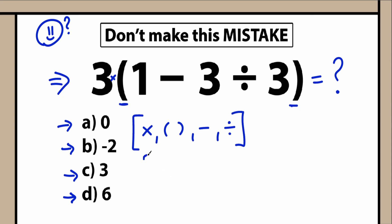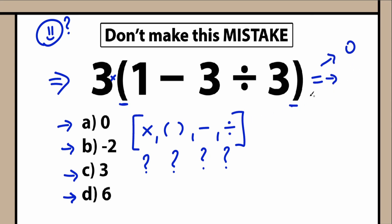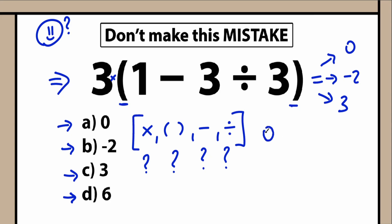Maybe we need to perform multiplication first, or parentheses first, or subtract 1 minus 3 first. A lot of students argue about what to do first, and whatever order of operation we select creates a different answer. For example, starting with multiplication might give 0; starting with parentheses might give minus 2; starting with division might give 3. We need to know the correct algorithm, and the best way is to learn about order of operations.